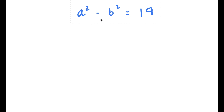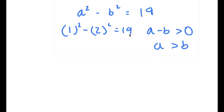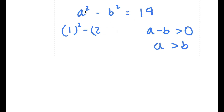We can use logic to deduct some information. If a squared minus b squared is equal to 19, this must mean that a minus b is greater than 0, meaning a is greater than b. Because if a was less than b — say a is 1 and b is 2 — then 1 squared minus 2 squared gives a negative number. Since a squared minus b squared is positive, a must be greater than b; if b were greater than a, this would be negative.